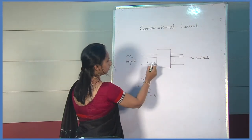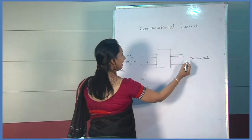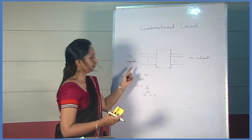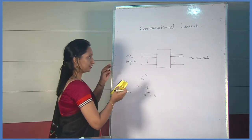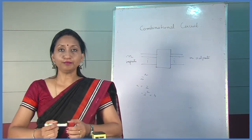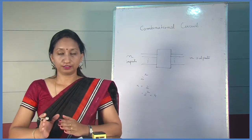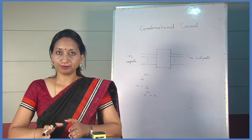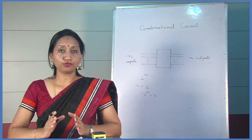There will be m outputs. Some examples of combinational logic circuits are multiplexer, demultiplexer, encoder, decoder, adder, and subtractor. Multiplexer and demultiplexer are very important combinational circuits. Let us first see what is a multiplexer.